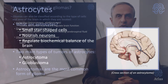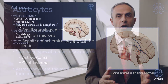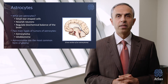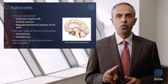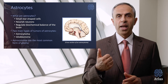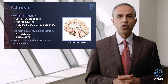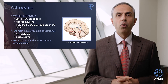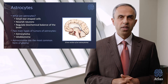What are astrocytes? They are small star-shaped cells that nourish neurons and regulate the biochemical balance of the brain. There are two main types of tumors of astrocytes: astrocytomas and glioblastomas. Astrocytomas are the most common form of glioma tumor.